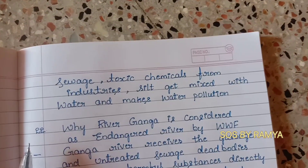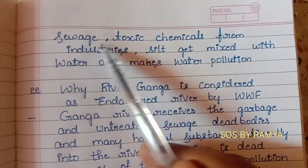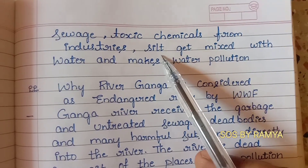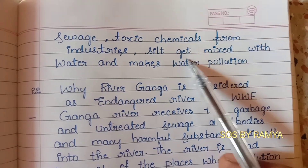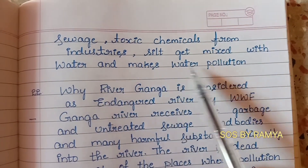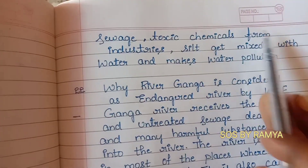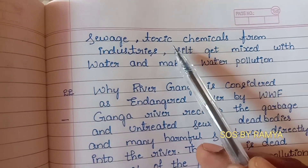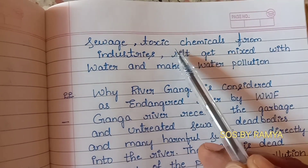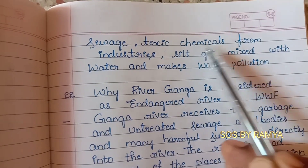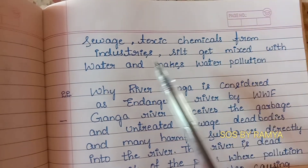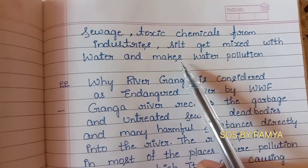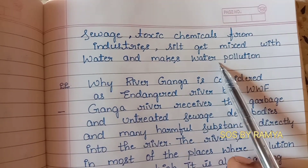How does water get polluted? Toxic chemicals from industries and silt get mixed with the water causing water pollution. Sewage release and unwanted materials from factories and industries, along with toxic chemicals and silt, mix with the water and cause water pollution.